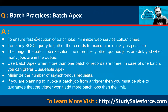Batch Apex best practices: to ensure fast execution of batch jobs, minimize web service callout time. Tune any SOQL query to gather records as quickly as possible — if you fetch unnecessary data, processing time will increase. The longer a batch job executes, the more likely other queued jobs are delayed. Use Batch Apex when more than one batch of records is needed; for a single batch, prefer Queueable Apex. Minimize the number of asynchronous requests. If invoking a batch job from a trigger, you must guarantee the trigger won't add more batch jobs than the limit.